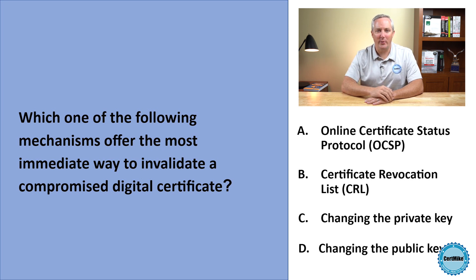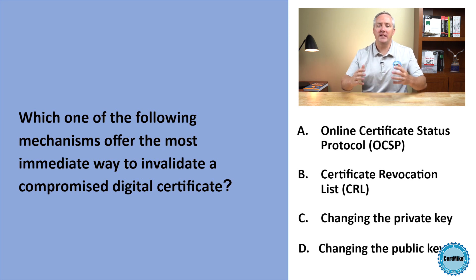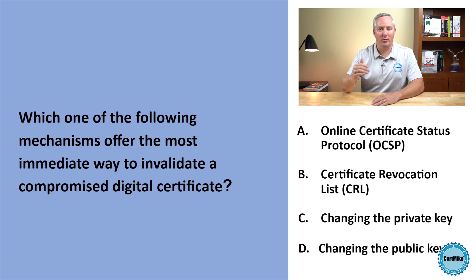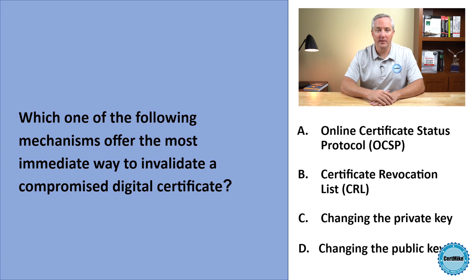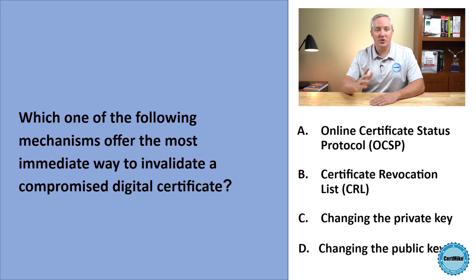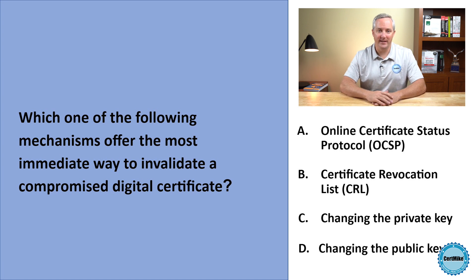Which one of the following mechanisms offers the most immediate way to invalidate a compromised digital certificate? Is it using OCSP, using a CRL, changing the private key, or changing the public key?